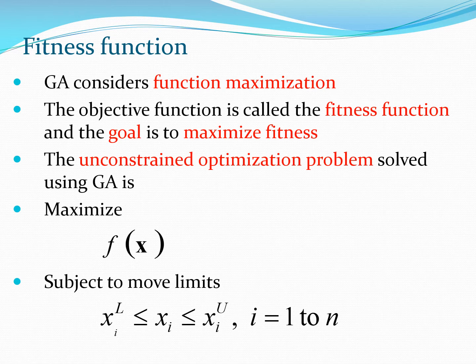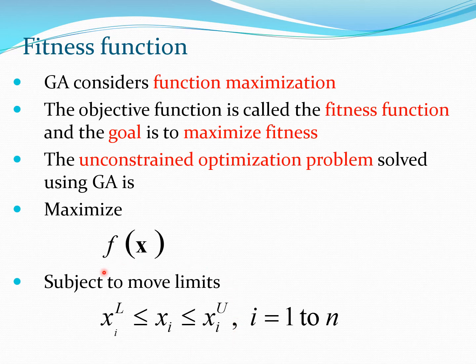Typically GA considers function maximization, whereas previously optimization was based on function minimization. The objective function is called a fitness function here, because fitness is something we are trying to maximize — so the goal in GA is fitness maximization. The problem is formulated as: maximize f(x), where x is a vector, subject to move limits. Move limits place a lower bound and an upper bound on each design variable, and the population is generated within this set.